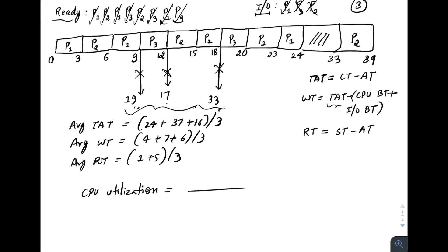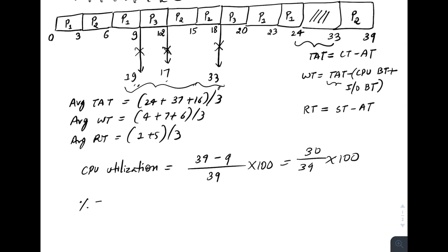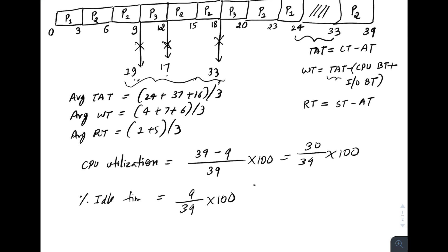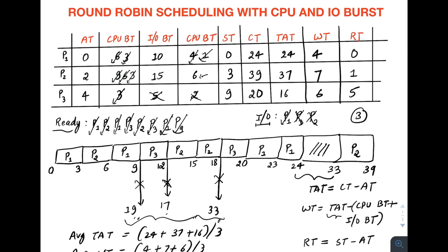The total schedule length is 39 units (time 0 to 39). The CPU was idle from 24 to 33, which is 9 units. CPU utilization = (39 − 9) / 39 × 100 = 30/39 × 100. Percent idle time = 9/39 × 100. Throughput = total number of processes / schedule length = 3 / 39 = 1/13 processes per unit time.